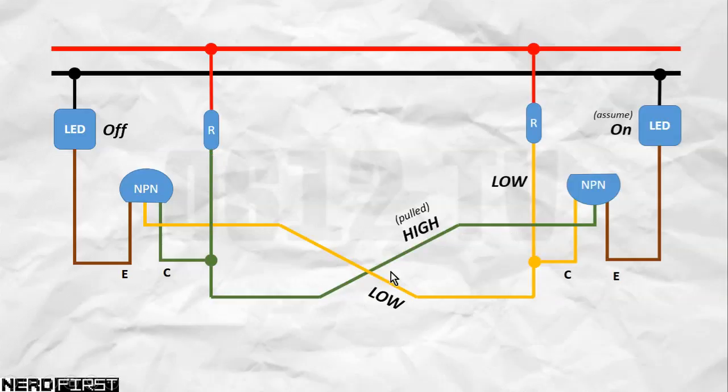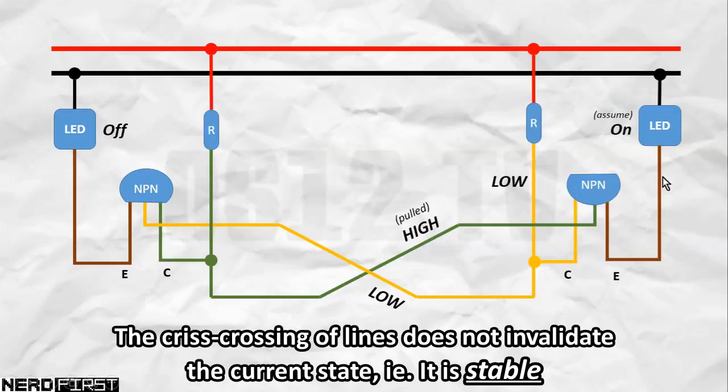Thankfully, we have a pull-up resistor here, which pulls the whole green line up to high. And there is one important conclusion we can draw from this. The high state here is consistent and okay at the base here. Remember, high implies that this switch here is closed, and that is indeed what is happening. All these states will remain as they are, or to use another word, it is stable.